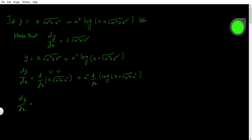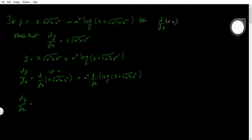UV method. d/dx of uv equals v into du/dx plus u into dv/dx. The formula: take u's derivative and multiply by v, then keep u and multiply by v's derivative.